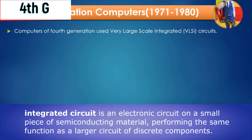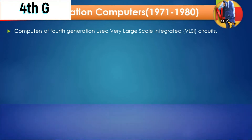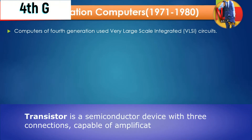The second generation used transistors. The second generation layer is known for transistors, and then integrated circuits came in the third generation.